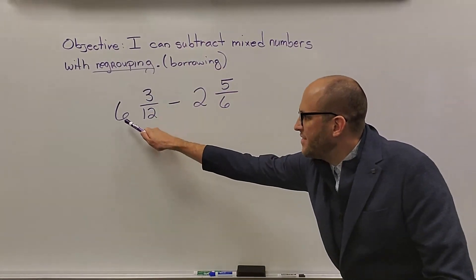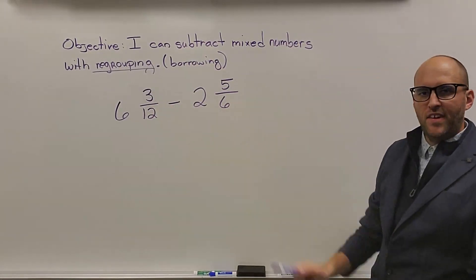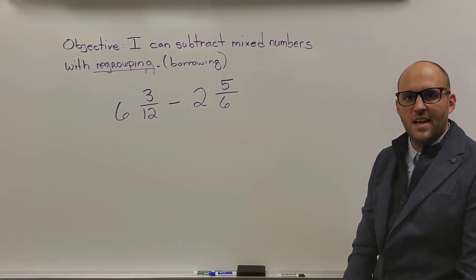All right, friends, for this problem we have 6 and 3 twelfths minus 2 and 5 sixths. Let's see how we do and hope to get a correct answer.